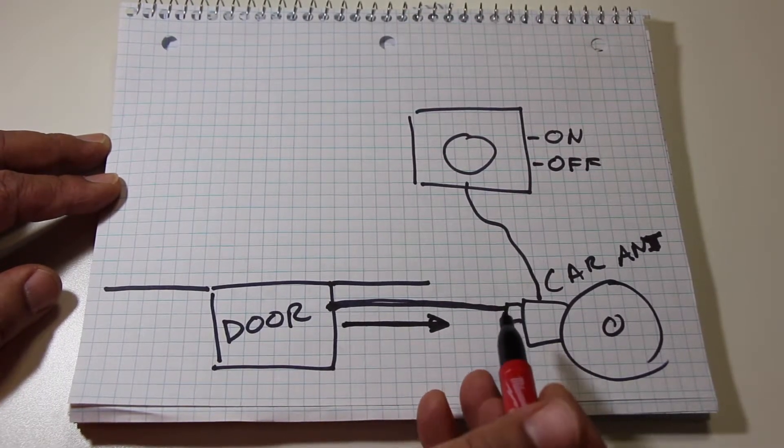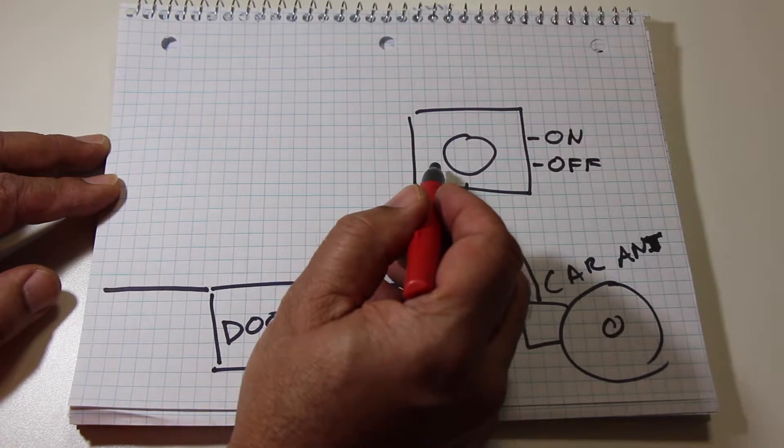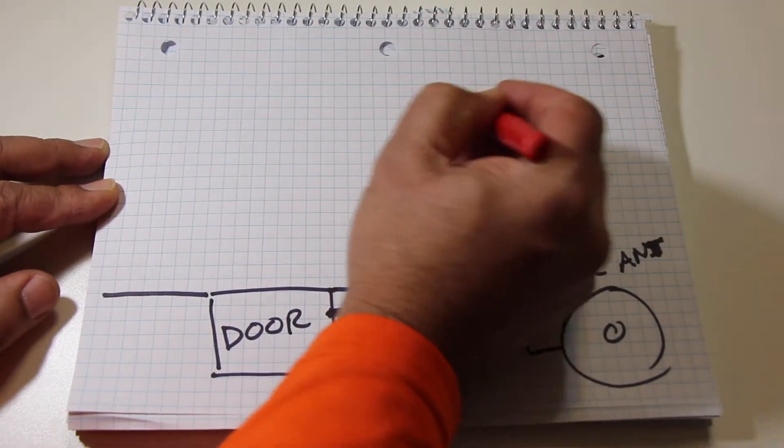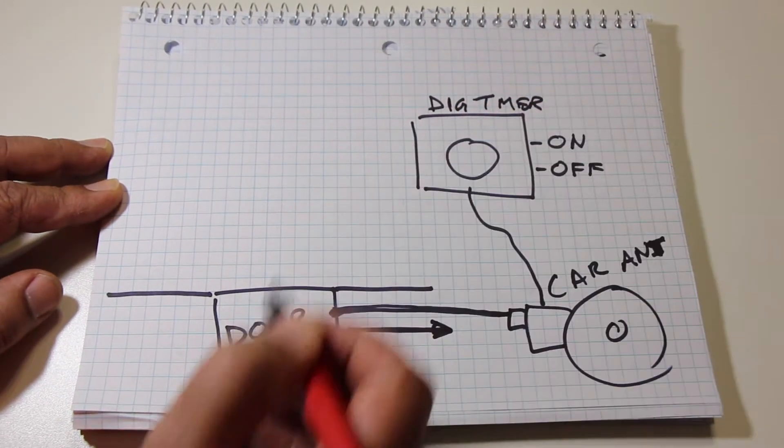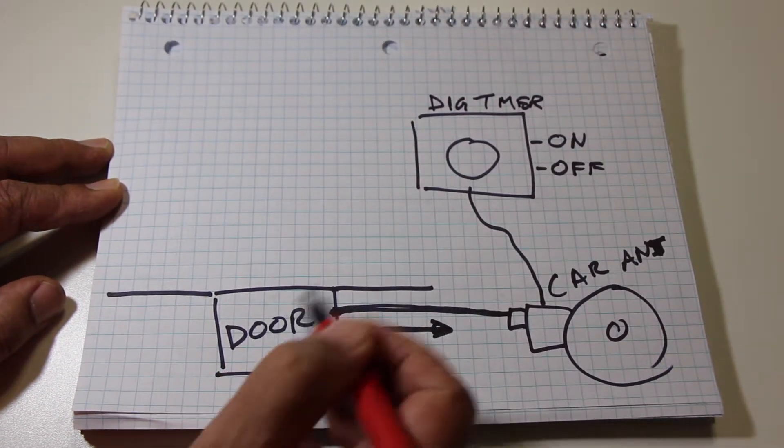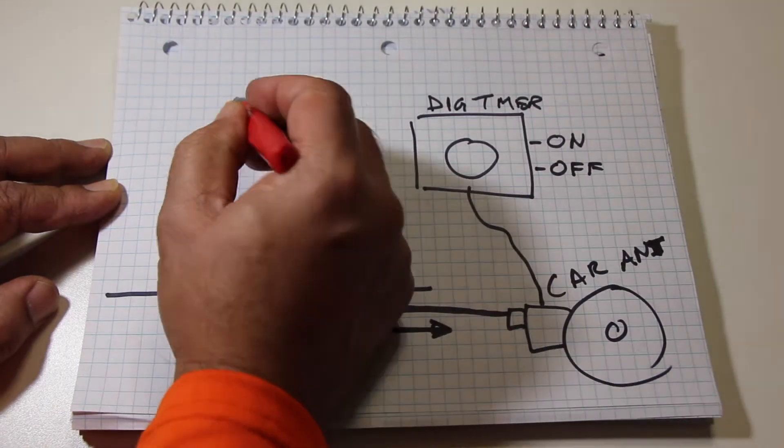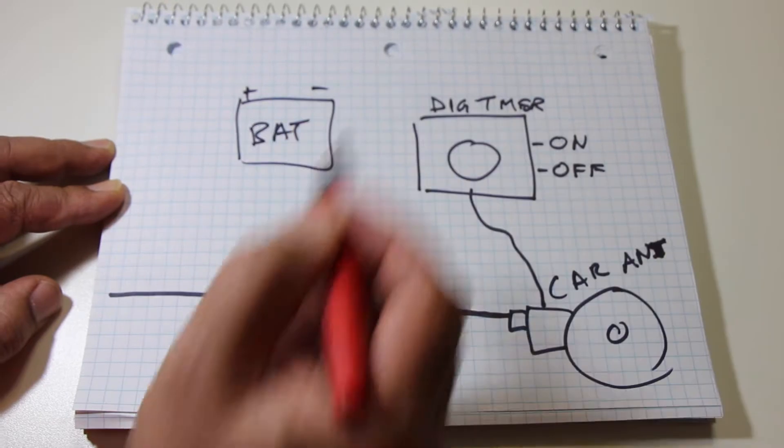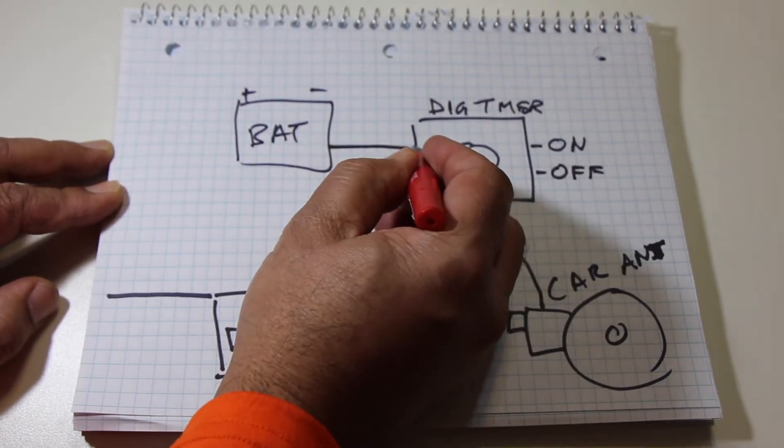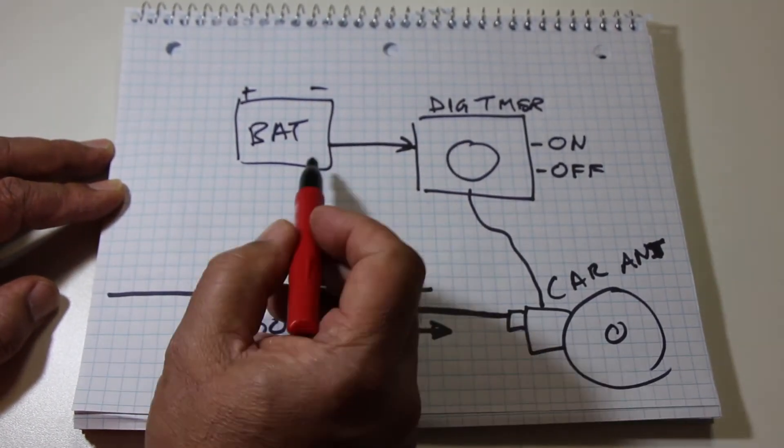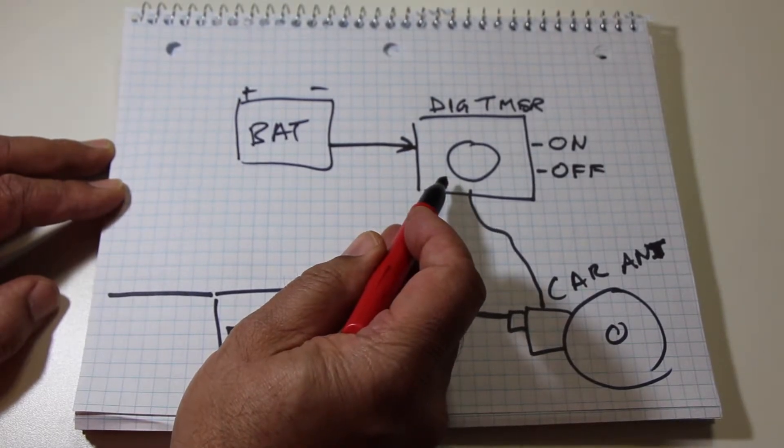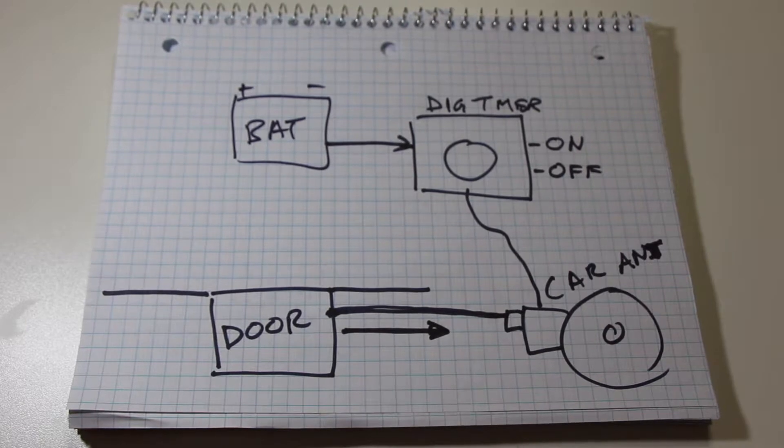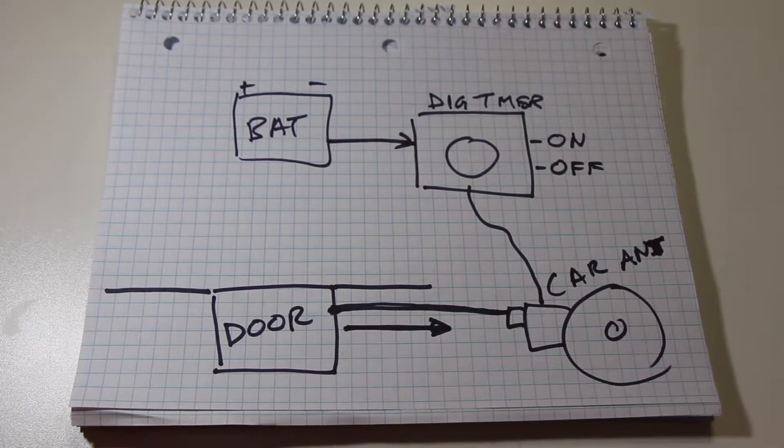That should in theory work. However, we need to provide power to the digital timer. We're going to have a battery connected to the digital timer to provide the power so the timer works. The battery, if you don't charge it, will die within a day or two.